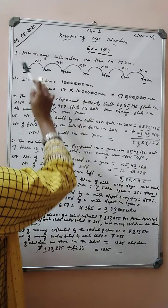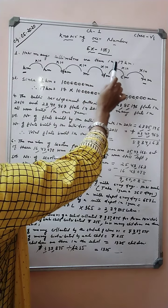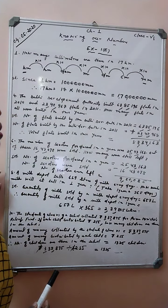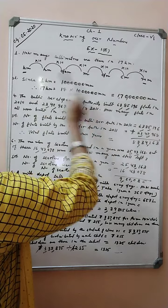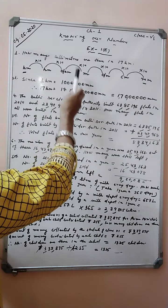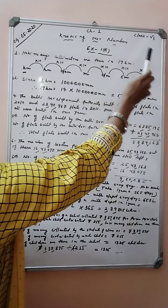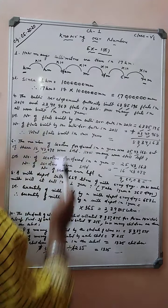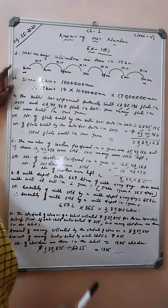Our first question is how many millimeters are there in 70 kilometers? For your understanding, I have written the units here. Kilometer, hectometer, decameter, meter, decimeter, centimeter and millimeter. We have to convert from kilometer to millimeter.